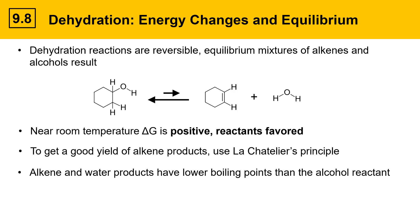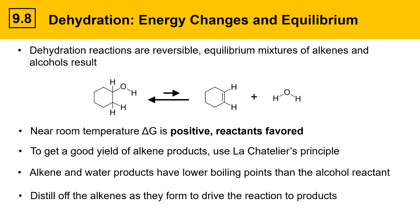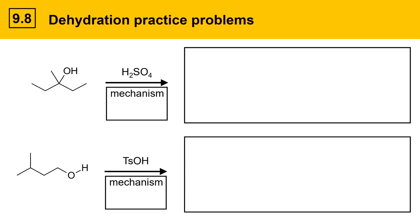What you need to do is remove the alkene products as they form. Alkene and water products have lower boiling points than the alcohol reactant, so you can distill off the alkenes as they form, driving the reaction toward products. As you remove alkene products by distillation, more alcohol is converted into alkenes, and eventually all of the alcohol can be pushed through to alkene products and water. I have a video that describes an experiment that does just that.